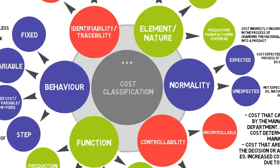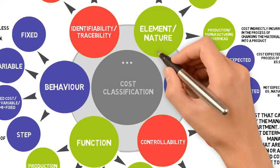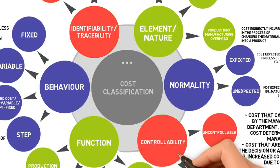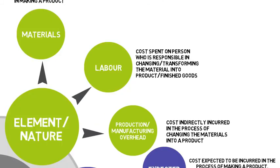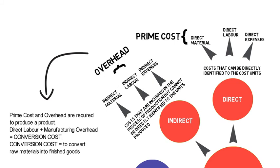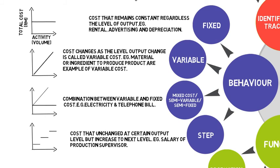Cost can be divided into six, which are element or nature, traceability or identifiability, behavior, function, controllability, and normality. Element or nature divided into three, which are material, labor, and production overhead. Traceability divided by two, direct and indirect cost. Direct cost are described as prime cost while indirect cost described as overhead. Cost behavior falls into four categories, which are fixed, variable, mixed, and step cost.